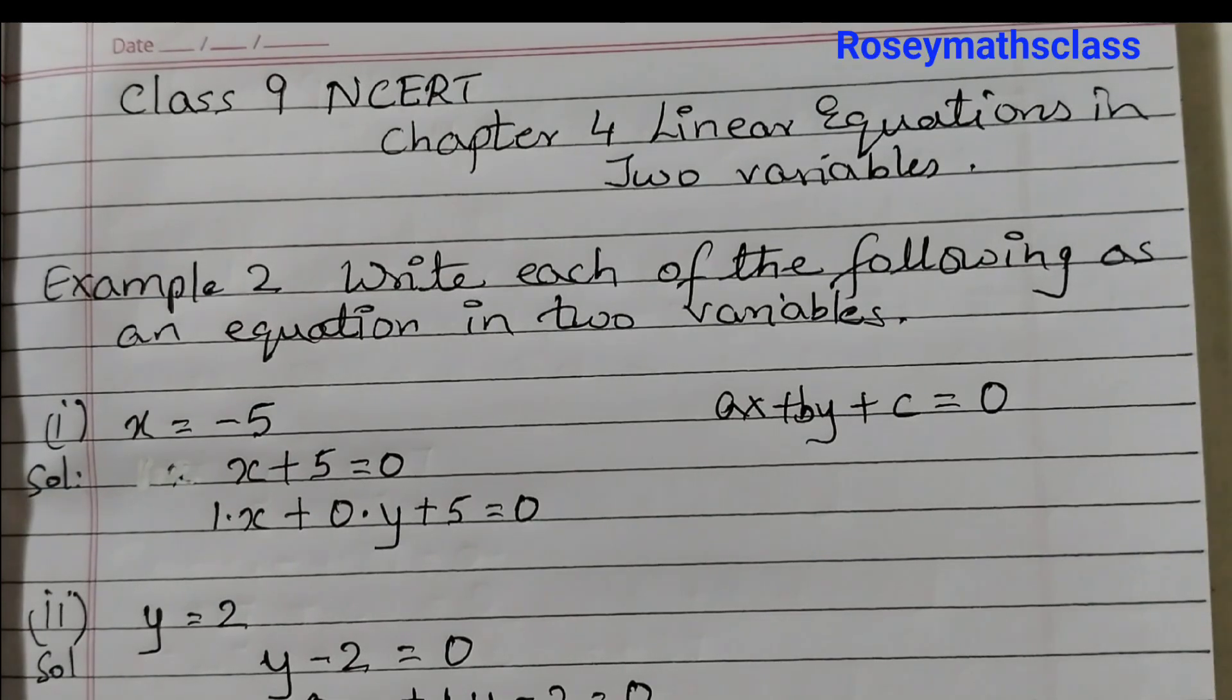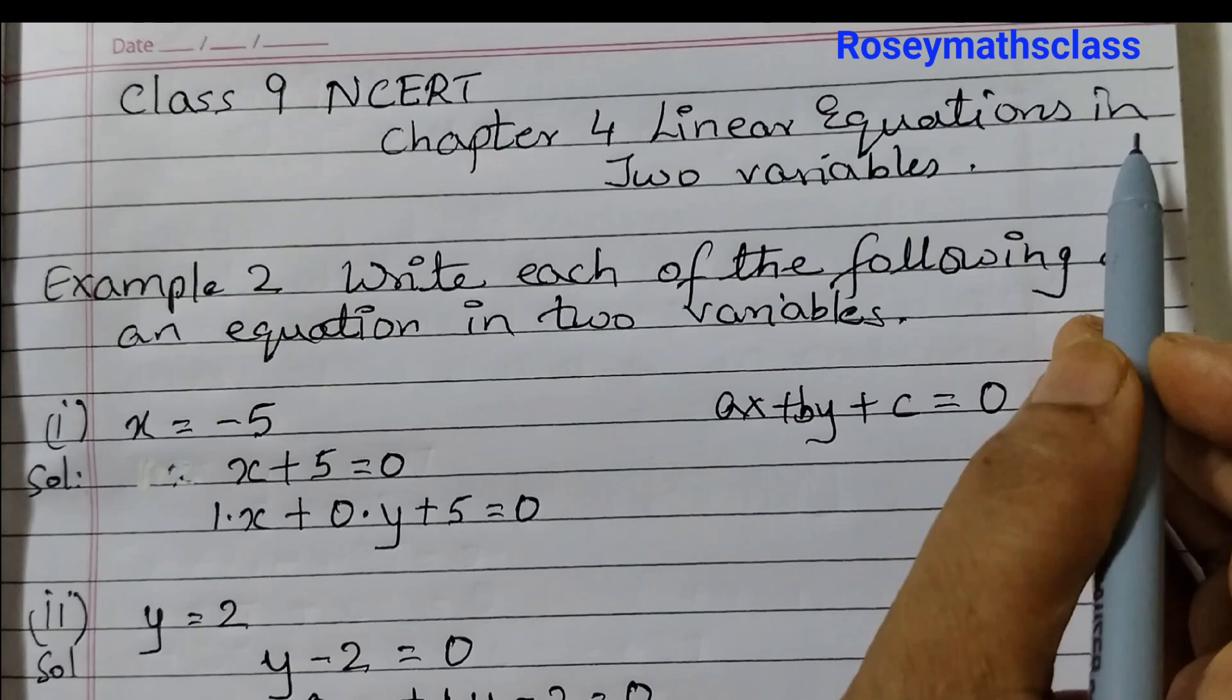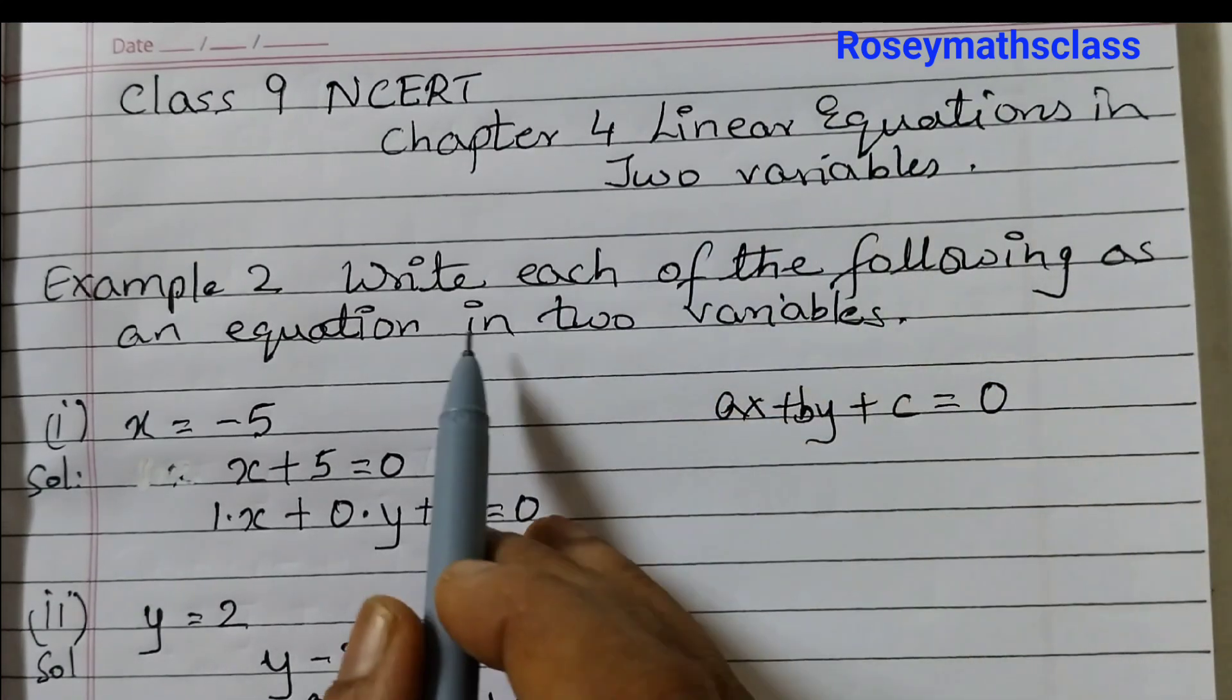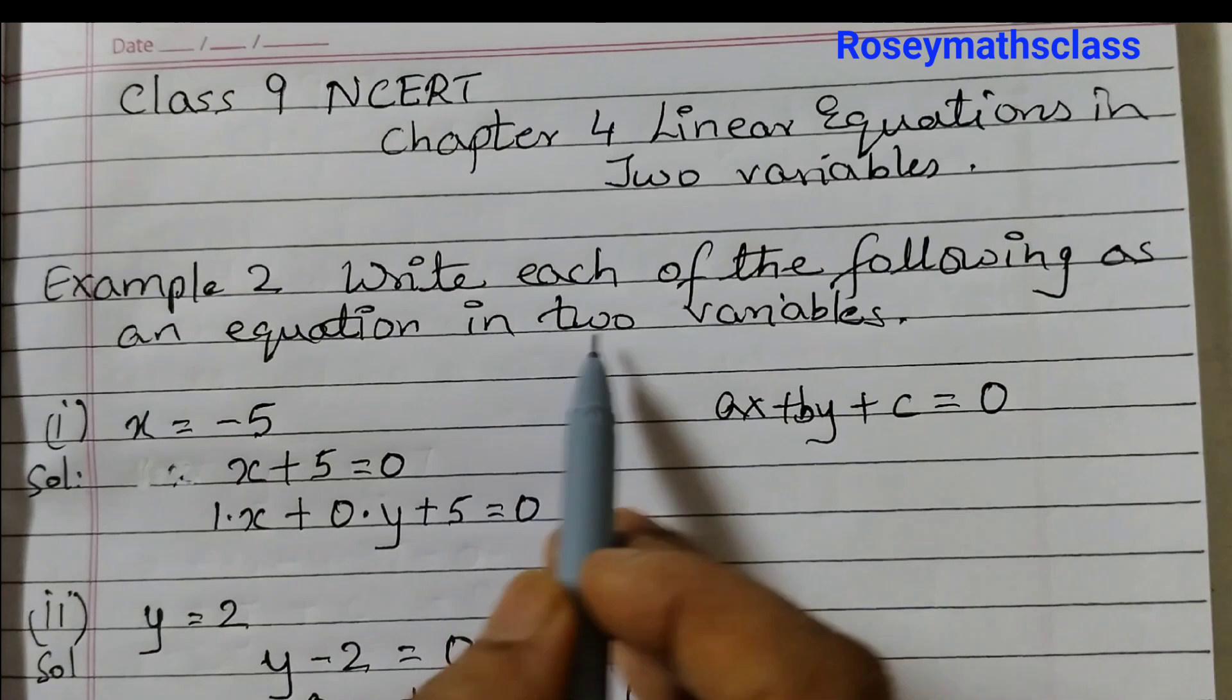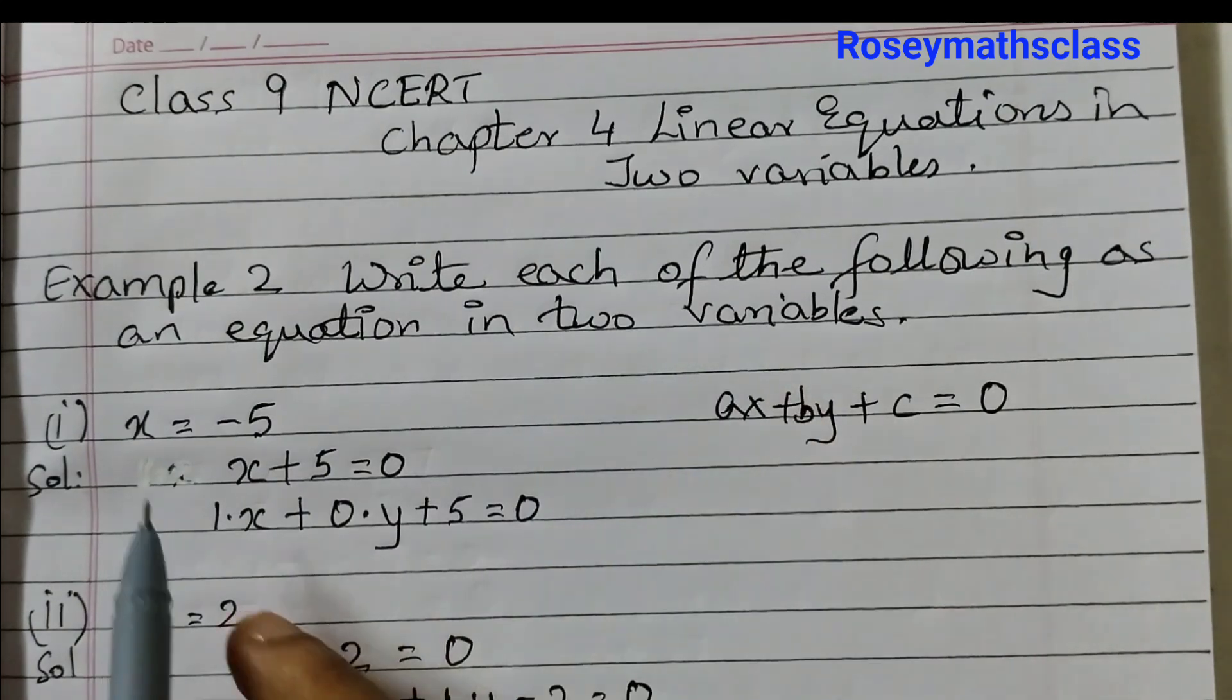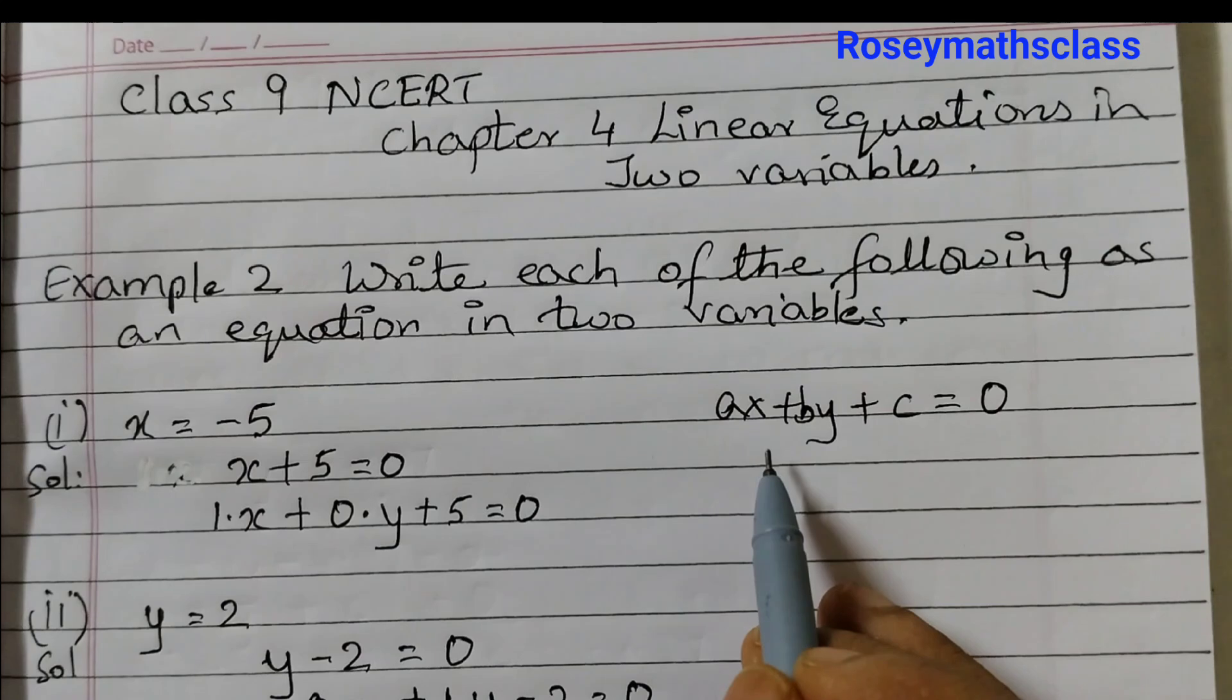Hello students, let us go over the solution of example number 2 of chapter 4 linear equations in 2 variables. Write each of the following as an equation in 2 variables. There are 4 examples given and we need to write all of these examples in this form.